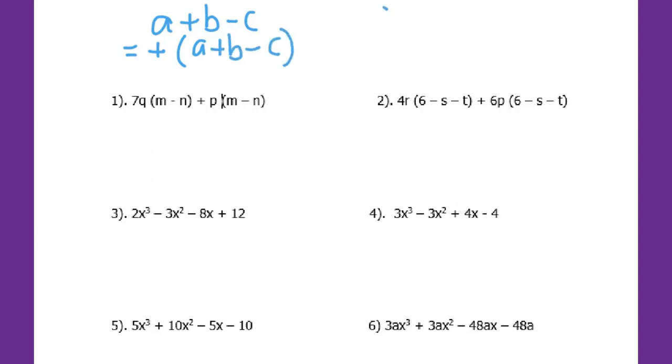But if I have a plus b minus c and I want to take the negative sign outside, I have to change the sign for every single term. So a turns to negative a, positive b turns to negative b, and negative c turns to positive c. These are the two facts you need to memorize.